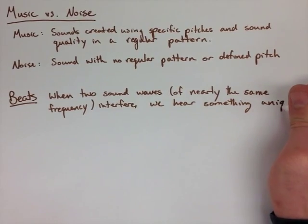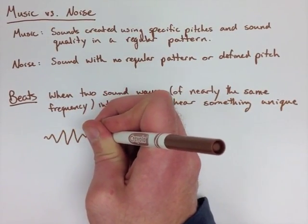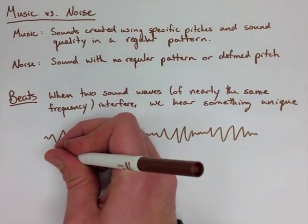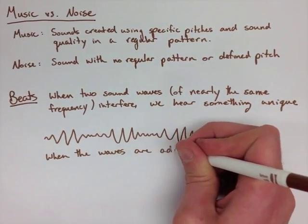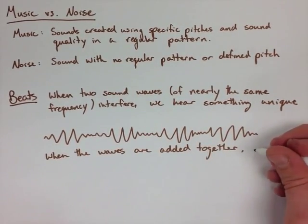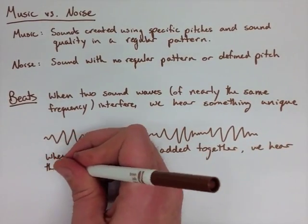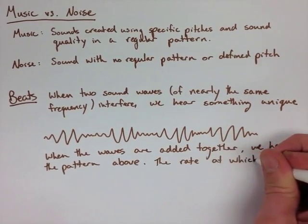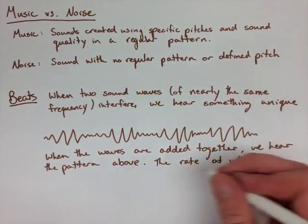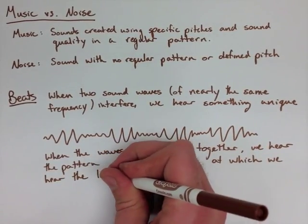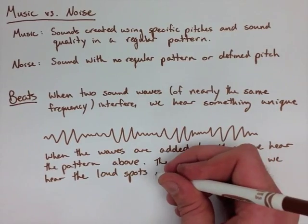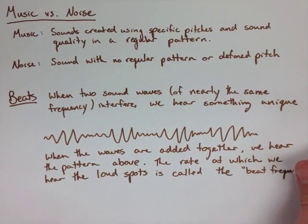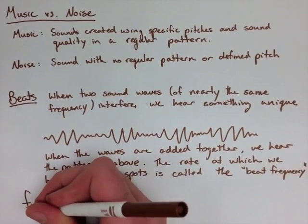If you look at the wave drawn below, this is what actually occurs. You get a large frequency and then almost a node, and a large frequency and almost a node. When these waves are added together, we can hear almost a pattern where it's like a vibration and then nothing. The loud spots — the bigger parts of the frequency — are called the beat frequency. The way we figure out what that is, we take the frequency of the second source, subtract the frequency of the first source, and then just make it a positive value.